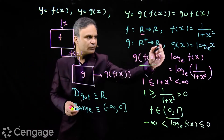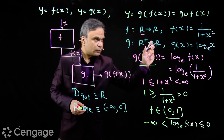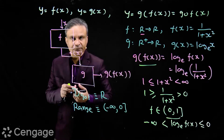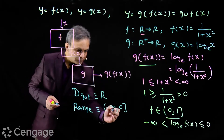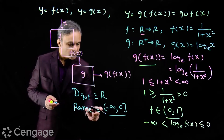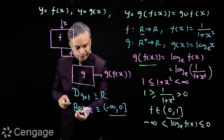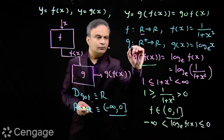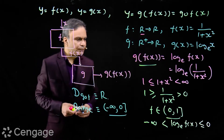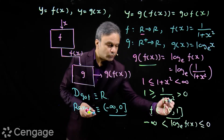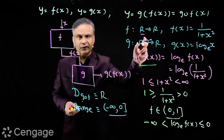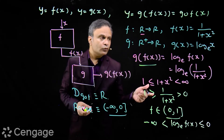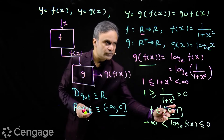This range of g(f(x)) is a subset of the range of function g(x). The range of g(x) is R, since the domain of g(x) is R⁺ and the function g(x) is getting all values for which it is defined. The range of g(f(x)) is a subset of the range of g because the set of input values to g in this composite is a subset of the full domain of g, which is R⁺. Since the input values are only (0, 1], the output range is only (−∞, 0].